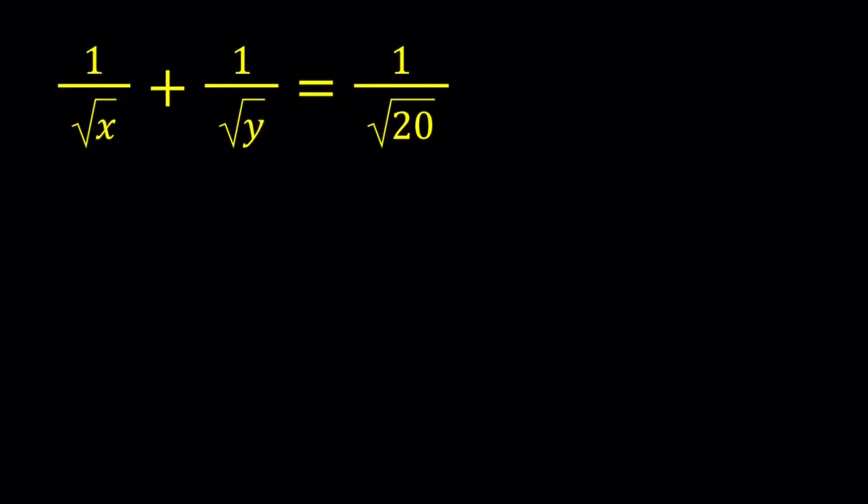Hello everyone. In this video, we're going to be solving a nice radical equation from Romania. We have 1 over the square root of x plus 1 over the square root of y equals 1 over the square root of 20. And we're going to be looking for integer solutions. So this is a Diophantine equation.